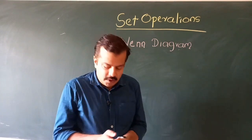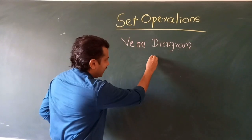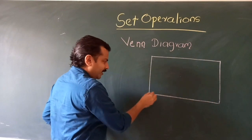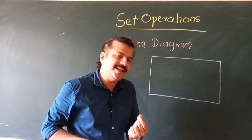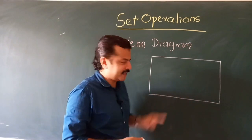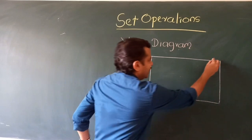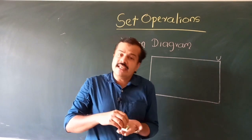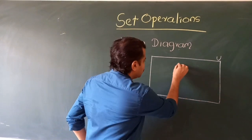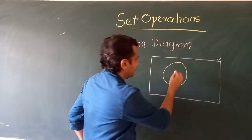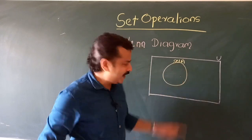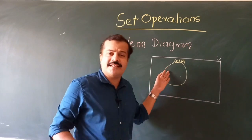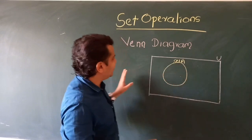The Venn diagram was first conceived by John Venn in the year 1880, which is why it is known as the Venn diagram. When we draw a Venn diagram, we first draw a universal set — the universal set is an all-inclusive set, so every set will be a subset of it. The universal set is drawn as a rectangle, and each individual set, being a subset, is drawn as a circle inside that rectangle. Let us call this set A.